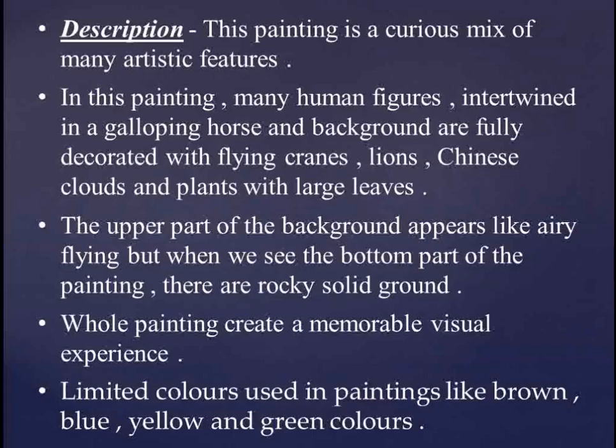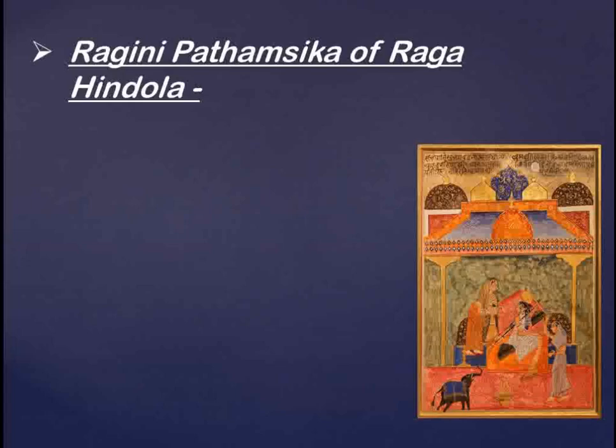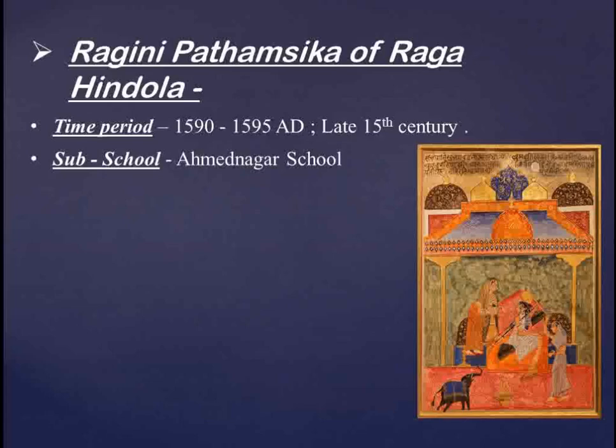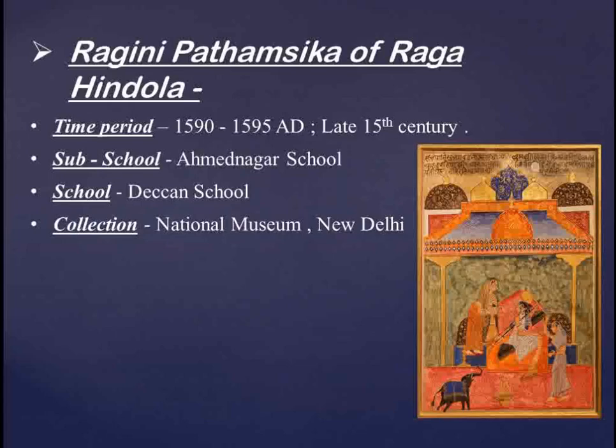Limited colors are used in this painting — brown, blue, yellow, and green. The next painting is Ragini Pathhamsika of Rag Hindola. This painting has been taken from the Ragmala series. The time period is 1590 to 1595 AD. The school is the Ahmad Nagar school, though some scholars believe it to be from the Bijapur school of Deccan Art. The collection is at the National Museum, New Delhi.